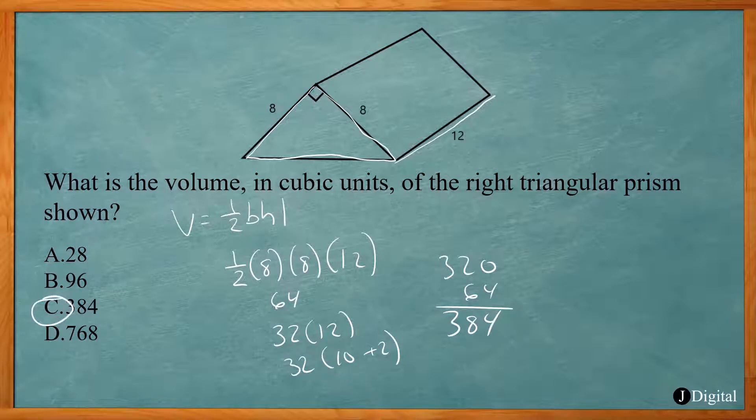So we just found the area of the triangle, then multiplied it by the length of the prism.